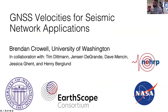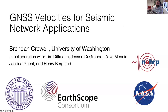Thanks everyone for coming. I'm going to talk about something I've been working on for the past four years or so — using GNSS velocities for different seismic network applications. A lot of my past work has been in using high-rate GNSS displacements for early warning and tsunami warning, so this continues that theme of collaborating with seismic networks to provide them with useful products. This is also based on recent NASA funding — a three-year project with EarthScope to bring GNSS velocities to seismic networks.